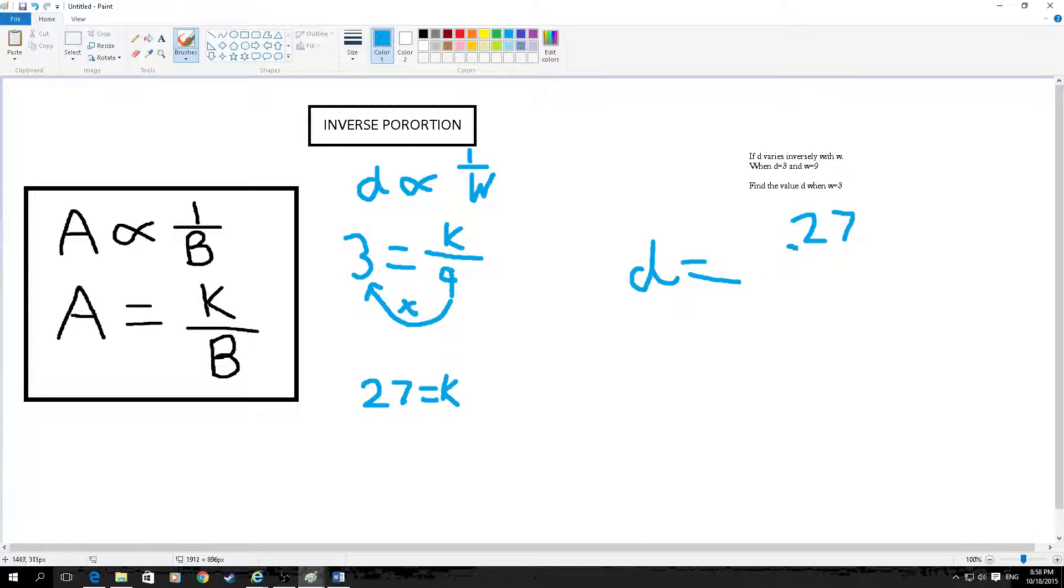27 over w, which in this case is 3. So d equals 9.